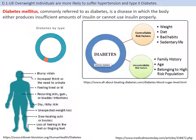Factors contributing to diabetes include controllable ones like diet, overall weight, and sedentary habits — you must burn the energy you consume. Uncontrollable factors include family history, genetics, thyroid function, age (metabolism drops as you get older, increasing diabetic risk), and belonging to high-risk populations, as certain genetic and racial groups show increased prevalence of genes that could lead to diabetes.